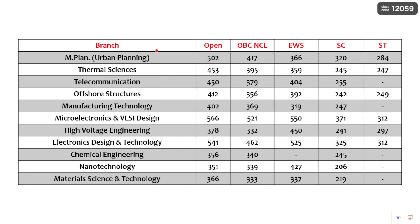These are all the other branches — M-Plan, that is Urban Planning, and Thermal Sciences, one of the top branches in Mechanical Engineering. You can see: Open 453, OBC non-creamy layer 395, EWS 359, SC 245.